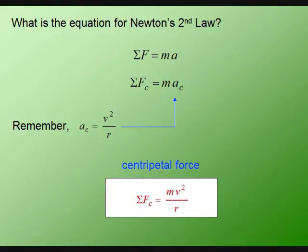F equals MA. And we're going to substitute centripetal acceleration in there, and by doing that, we get an equation to calculate the centripetal force. The Newton's second law for circular motion is F equals Mv squared over R.